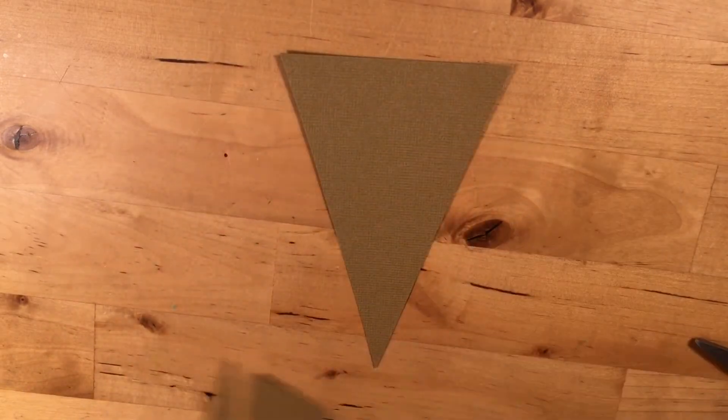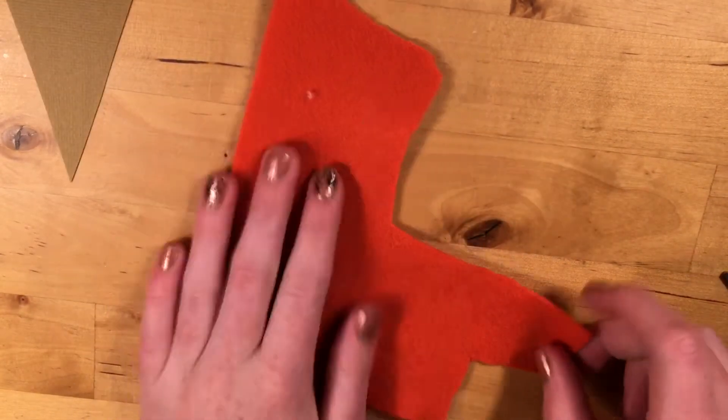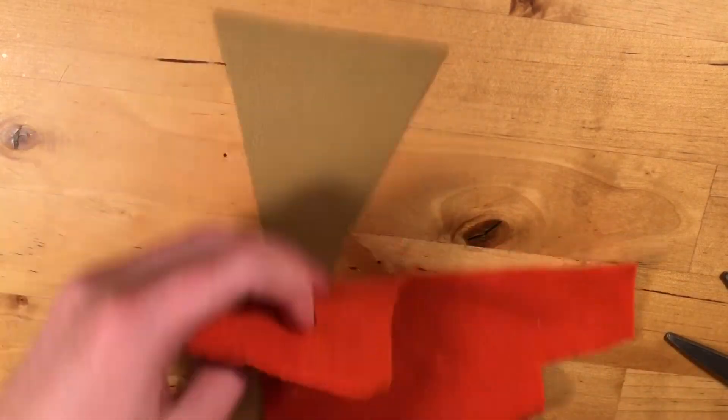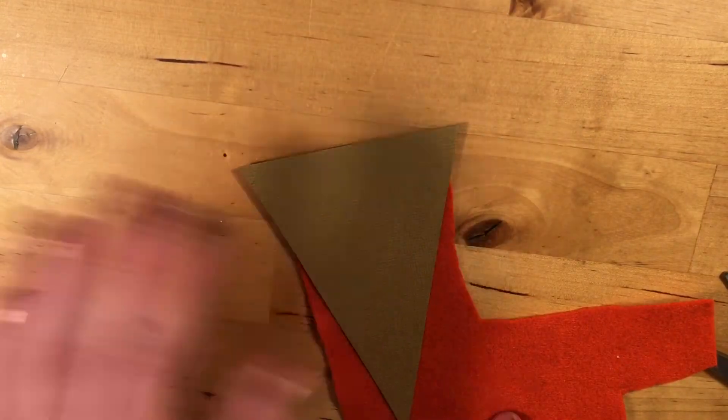Great, now that we've got our triangle, we're going to take our color of felt we want. I'm going to be making a pumpkin pie, so I chose orange. So what I'm going to do is I'm going to trace the pie.